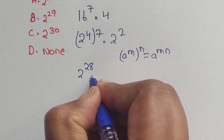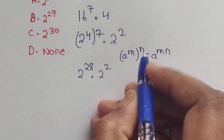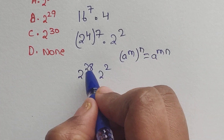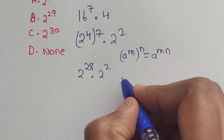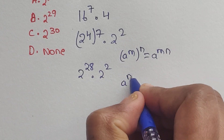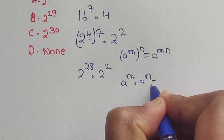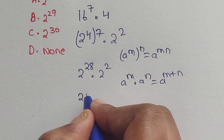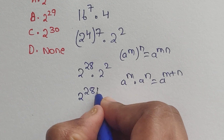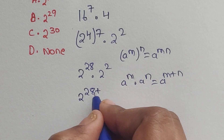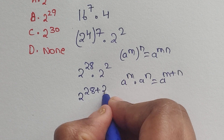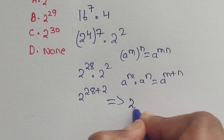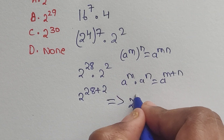Now we have 2 to the power of 28 times 2 to the power of 2. Here we have the same base with different exponents, so we apply the formula aᵐ × aⁿ = aᵐ⁺ⁿ. So we get 2 to the power of 28 plus 2, which equals 2 to the power of 30.